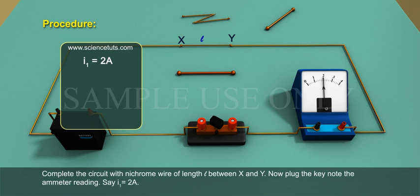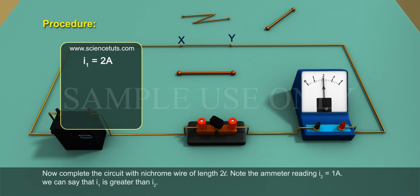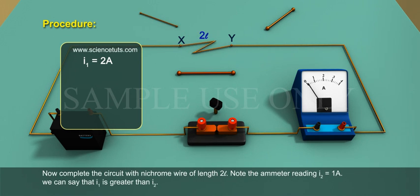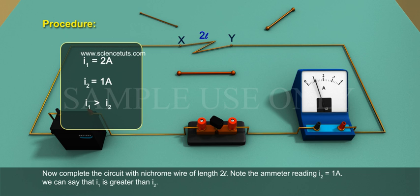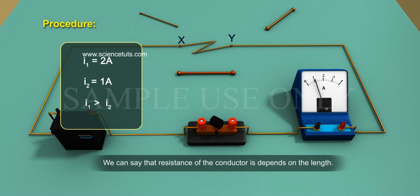Say I1 is equal to 2A. Now complete the circuit with nichrome wire of length 2L. Note the ammeter reading. I2 is equal to 1A. We can say that I1 is greater than I2. We can say that resistance of the conductor depends on the length.